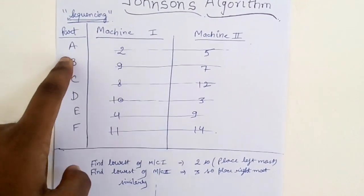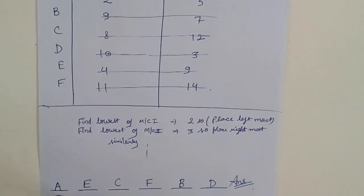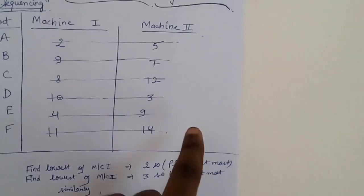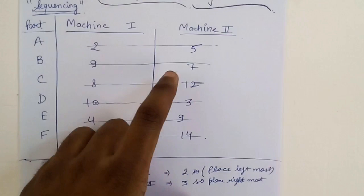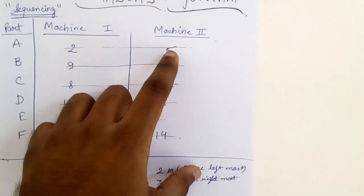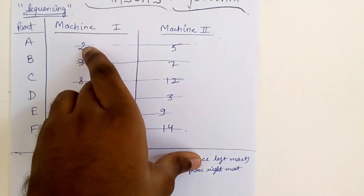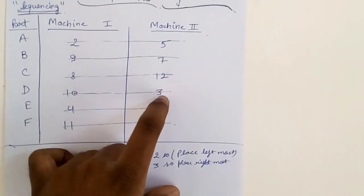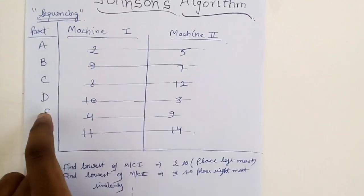Now go to machine two. The remaining will be seven, twelve, three, nine, and fourteen because A is already striked off. Take the least of these, which is three. Corresponding to three is part D, so you strike off this row and write D on the rightmost position.